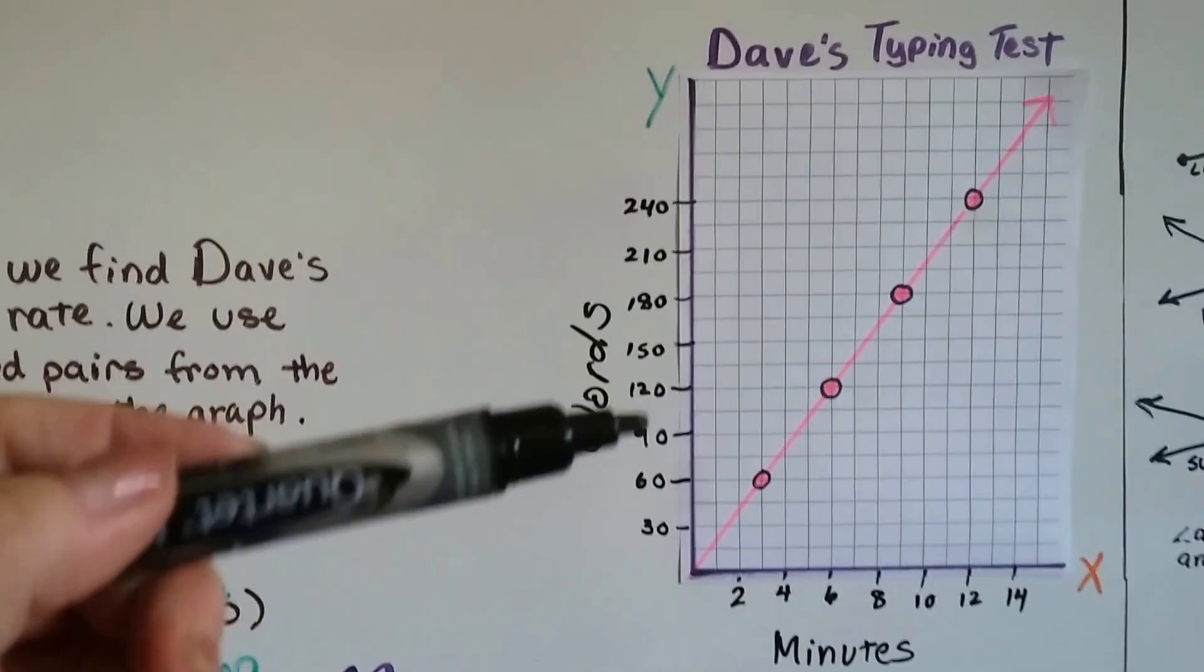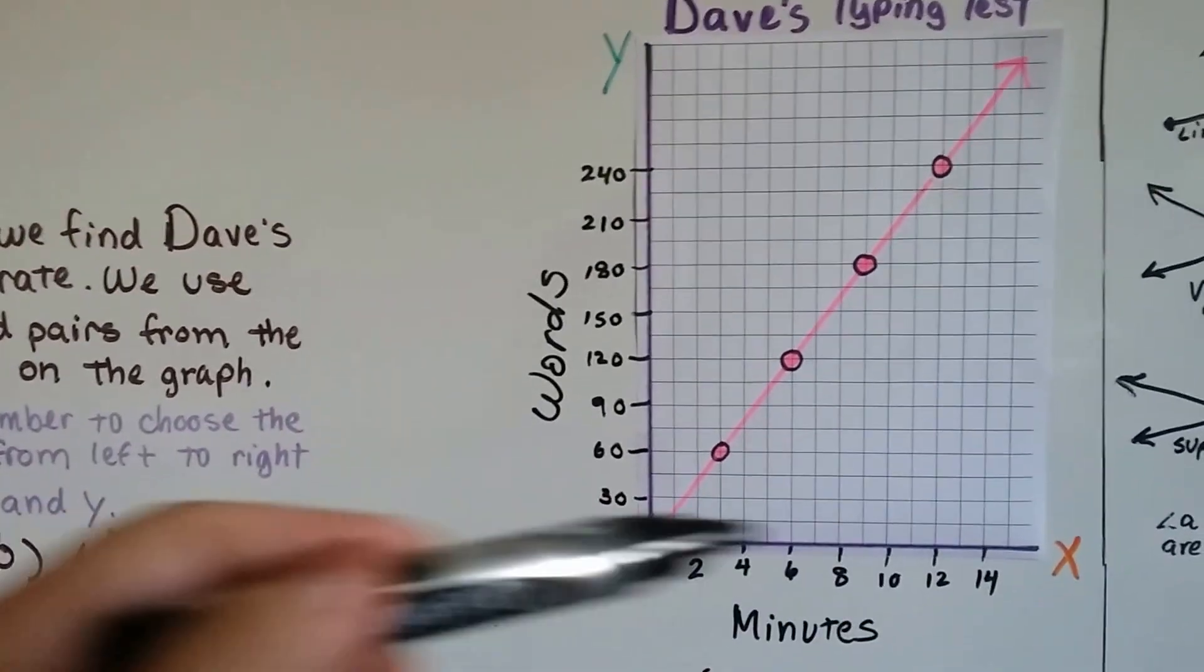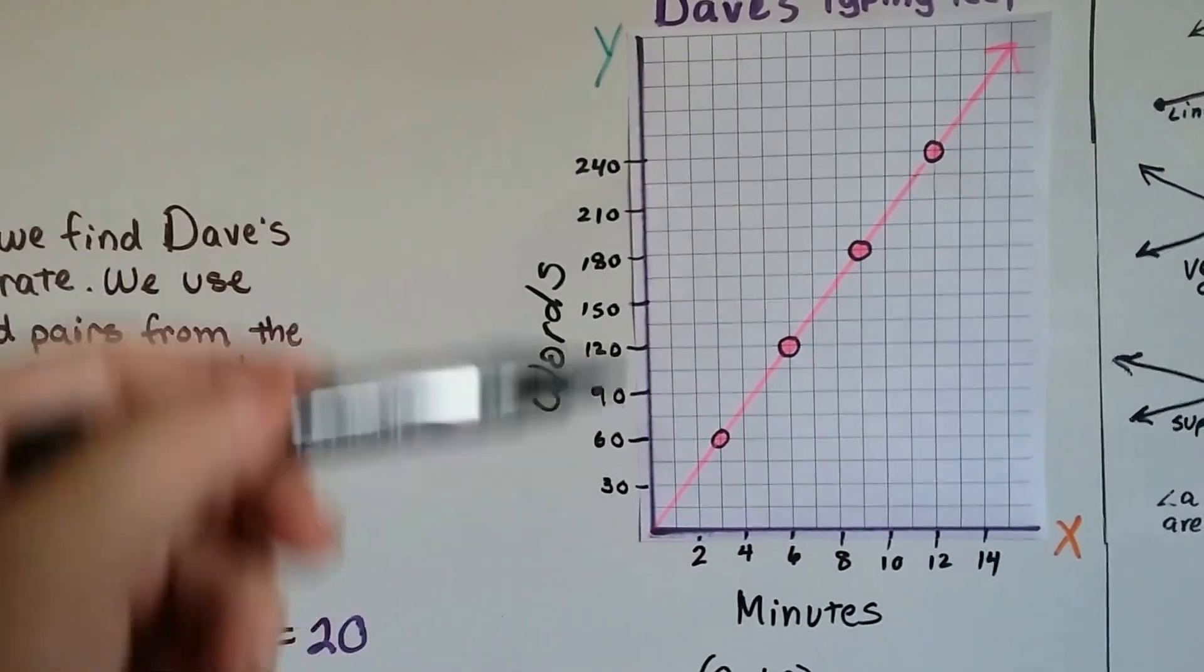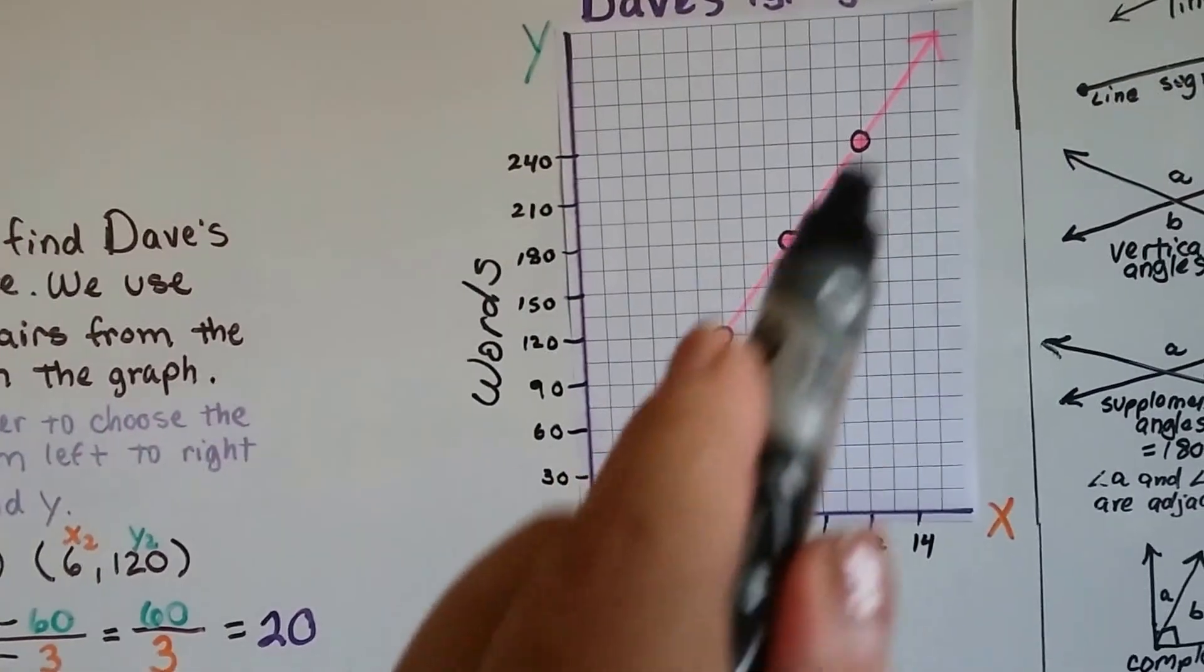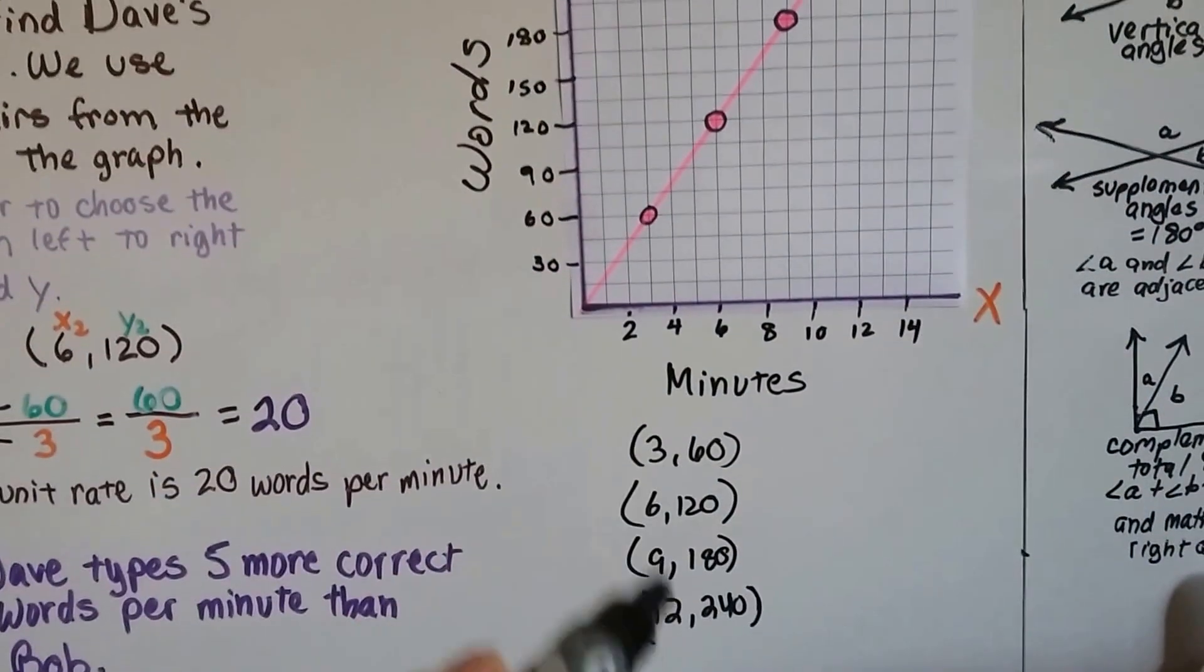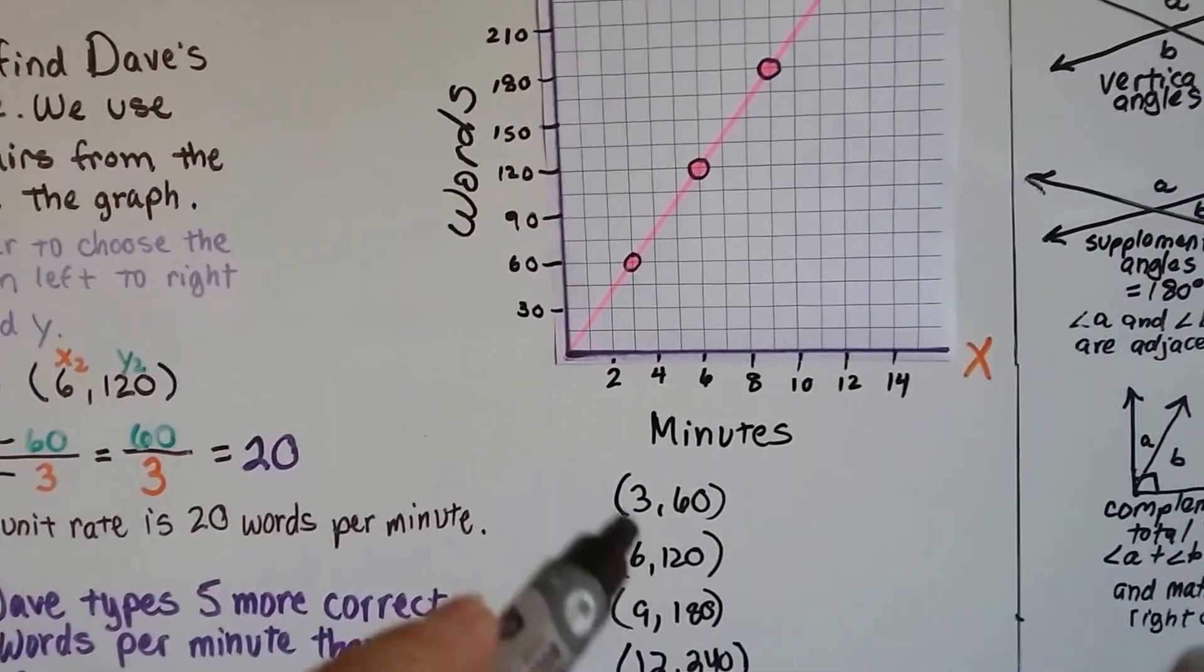And we can see Dave's typing test. Here's his x, his minutes, and here's his y, his words that he typed correctly. And we can see the plotted points, and those would represent these ordered pairs that we were able to pull from the graph.